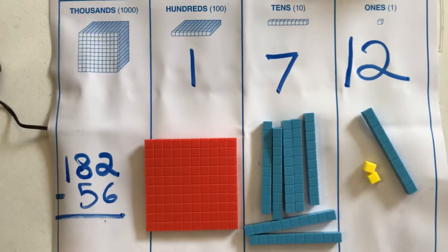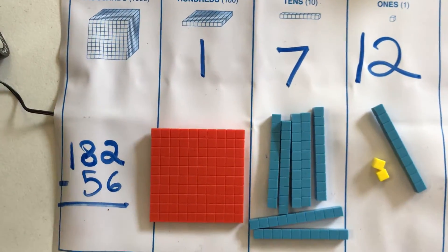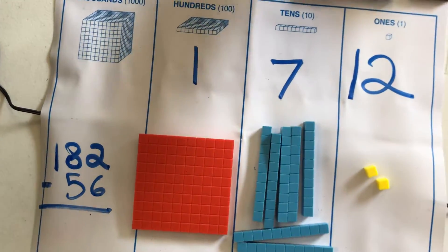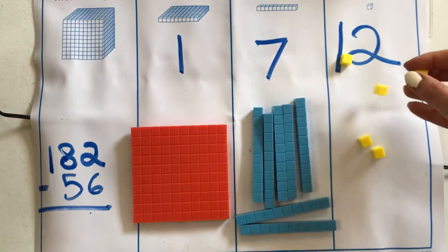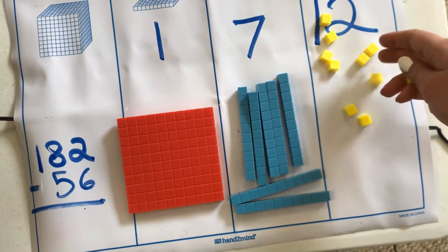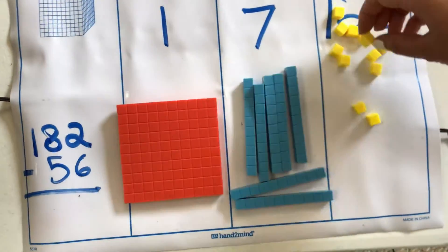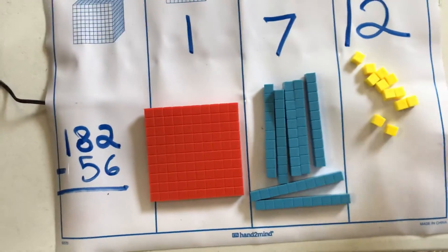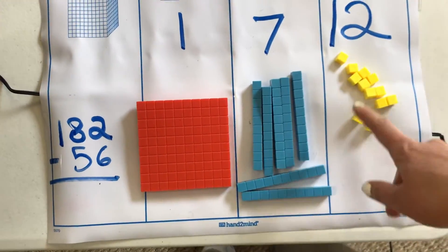Now can I do my problem? Can I take six away? Well, yes, I can, but I'd have to break this up. So instead, I'm going to swap that out for individual ones, counting one through ten, which is just like my 10 stick, except it's broken up so that I can actually take away. So I still have 12.